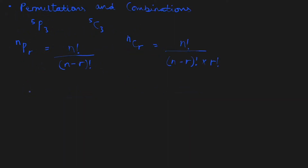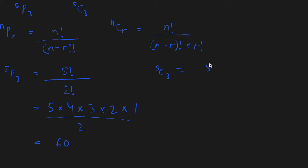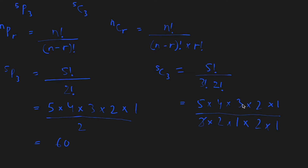Let us take some examples to help us understand this. 5P3 is equal to 5 factorial divided by 2 factorial, which is equal to 5 times 4 times 3 times 2 times 1 over 2, and this is equal to 60. On the other hand, 5C3 is equal to 5 factorial over 3 factorial times 2 factorial, which is equal to 5 times 4 times 3 times 2 times 1 over 3 times 2 times 1 times 2 times 1. Here the 3s can cancel, the 2s can cancel, this 2 can cancel with this 4 leaving 2, and we are just left with 10.